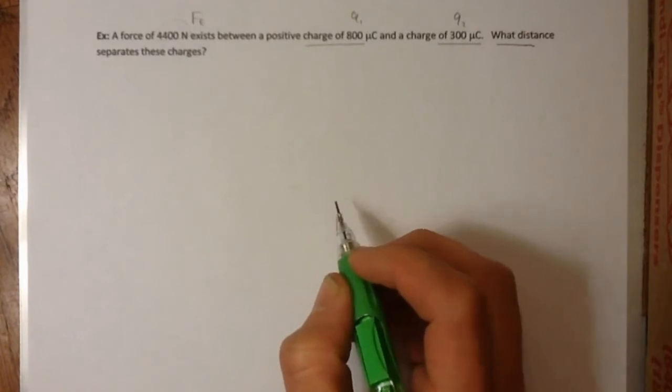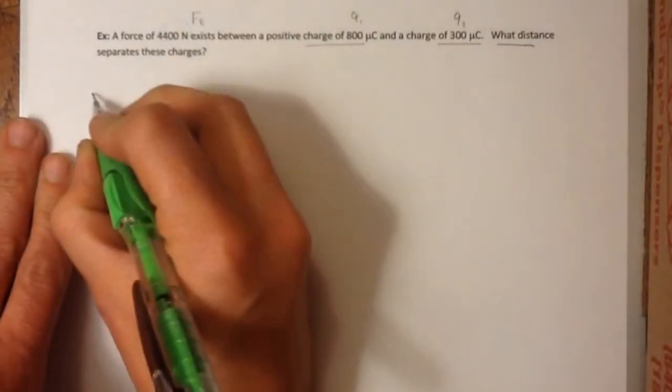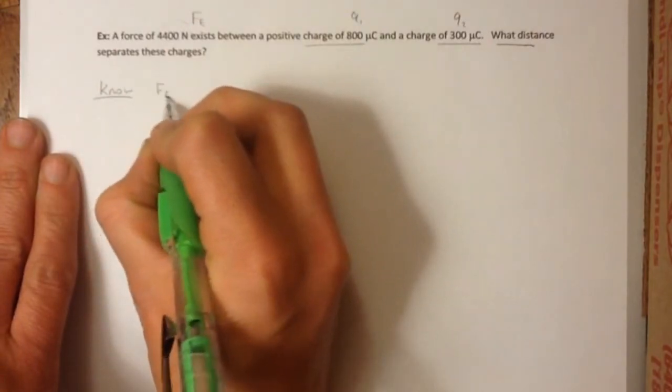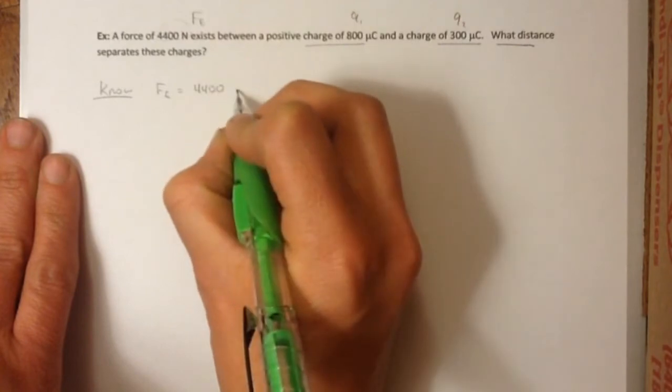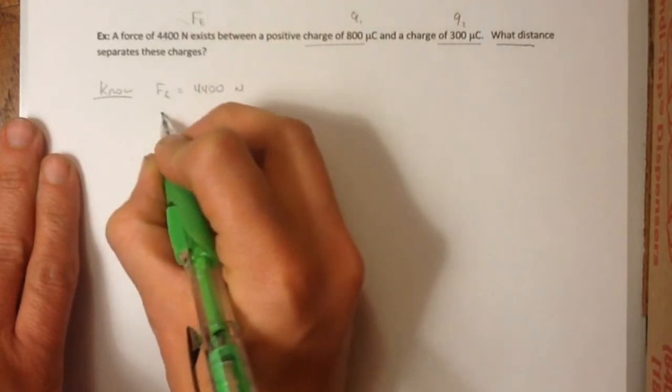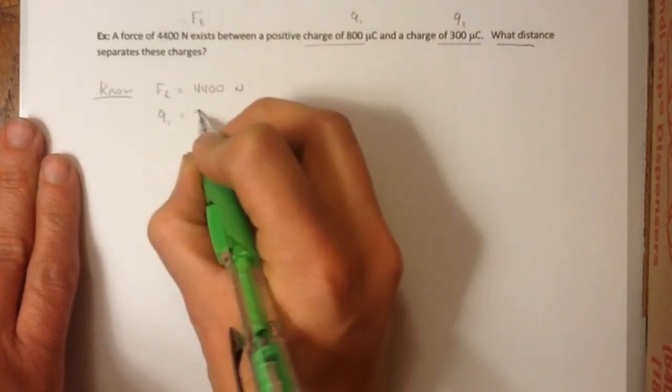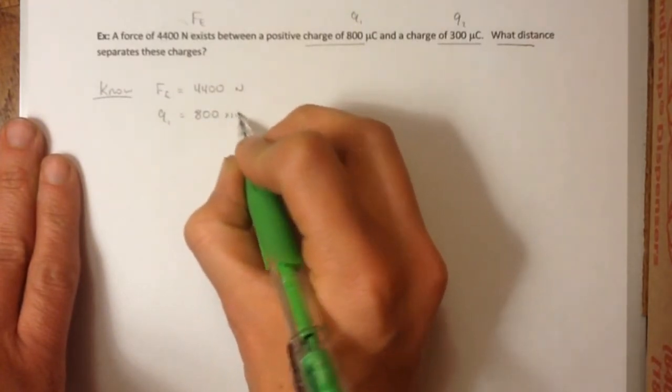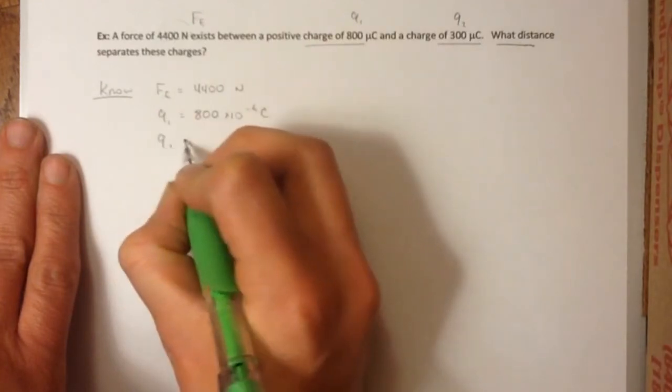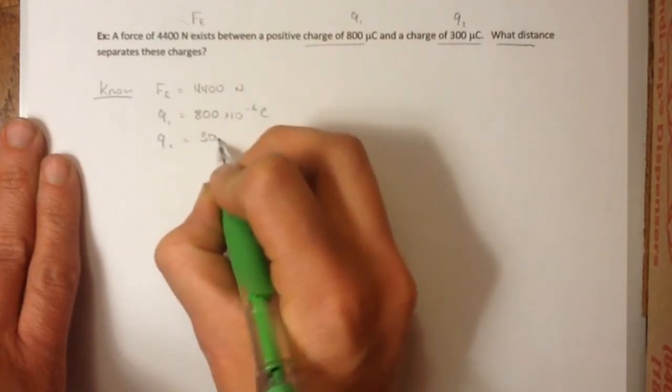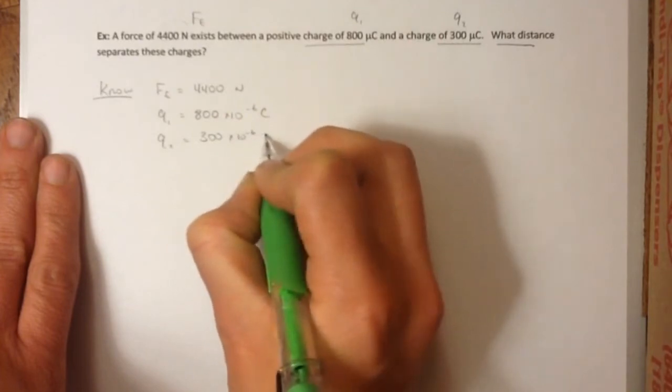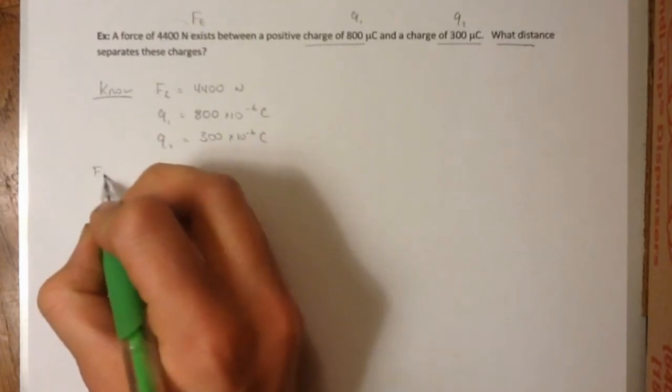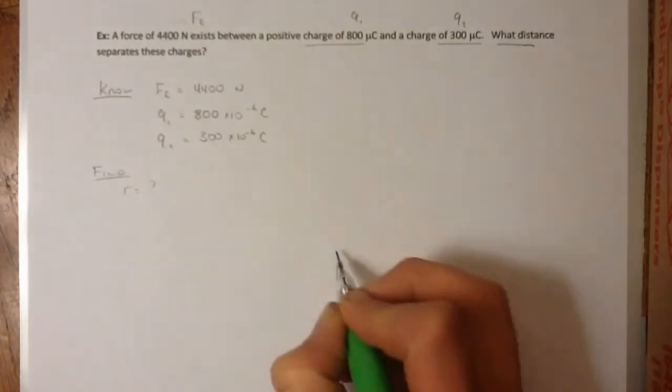So if I could quantify this and look at things that I know, I know that my electrostatic force is 4,400 newtons. I know that my Q1 is 800 microcoulombs. So 800 micro, that's times 10 to the negative 6 coulombs. And then Q2 is 300 microcoulombs, so 300 times 10 to the negative 6. And what distance separates these charges? That's what I'm trying to find. So I'm trying to find the R value.